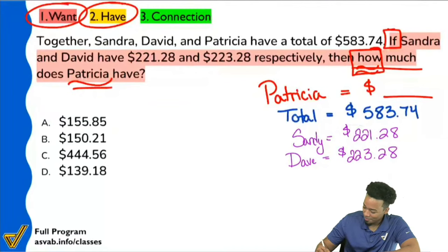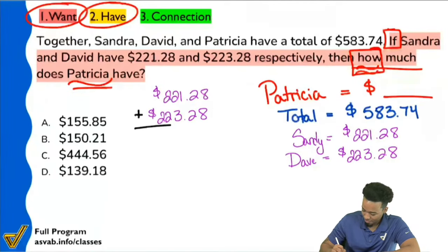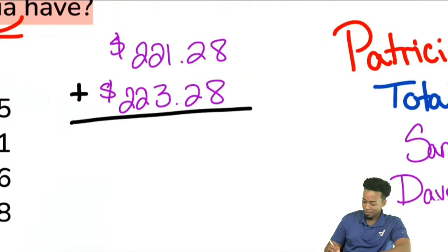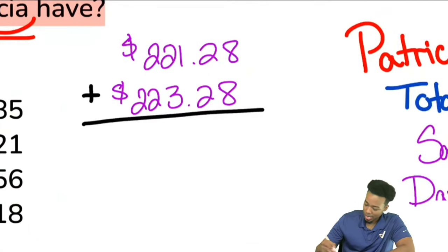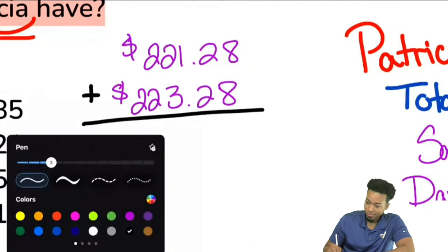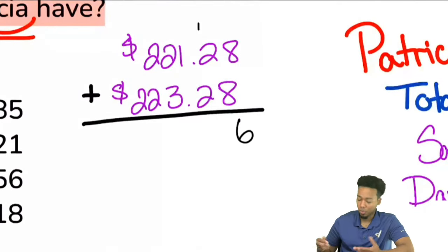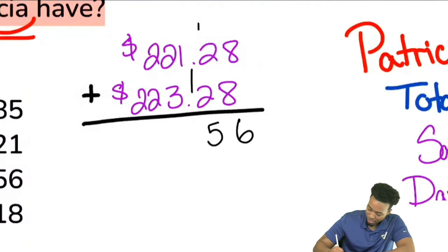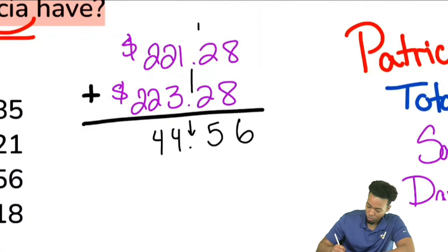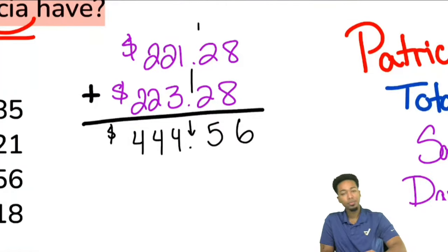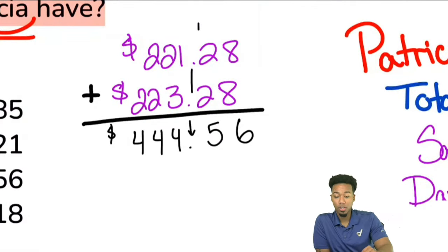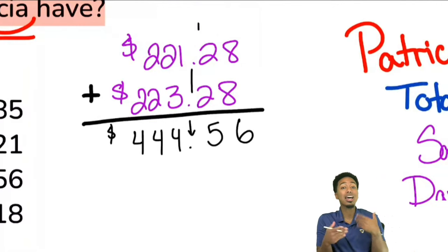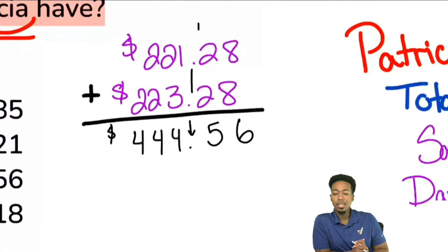Let's add these up: 8 plus 8 is 16, carry the 1. 2 plus 2 plus 1 is 5. Keep that decimal place. 1 plus 3 is 4, 2 plus 2 is 4, 2 plus 2 is 4. That gives us $444.56. All we did was add David and Sandy's money. The next step is to subtract that from the total. The total was $583.74, so we subtract $444.56 from it.